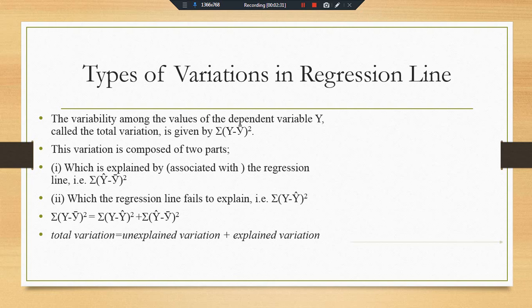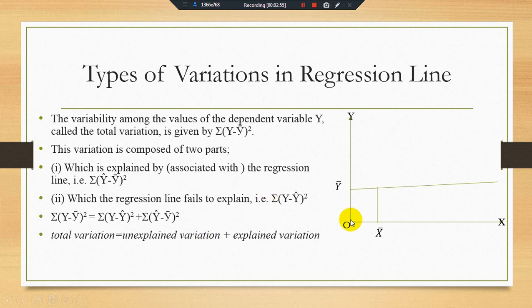Let's look at a graphical example. We have independent variable X and dependent variable Y. The regression line passes through the mean value of X and the mean value of Y. Here we have an estimated regression line, and this is our estimated regression line: Y-hat = A + BX.